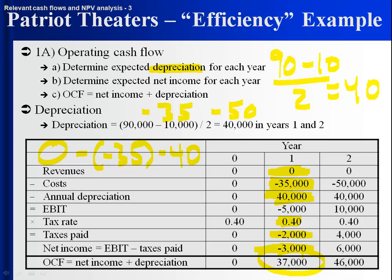Another way to look at it: we're going to save $35,000 in costs and $2,000 in taxes, so it benefits us by $37,000. For year two, you've got bigger cost savings: zero minus negative 50 minus 40 means taxable income would actually go up by $10,000. The cost savings are so large they lead to an increase in taxable income, so $4,000 more in taxes would be paid. $10,000 minus $4,000 gives net income of $6,000. Add that back to depreciation of $40,000 and operating cash flow is $46,000. You can think of it as saving $50,000 but paying $4,000 more in taxes, so it benefits you by $46,000.